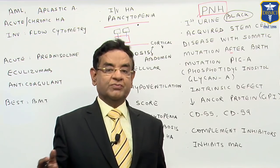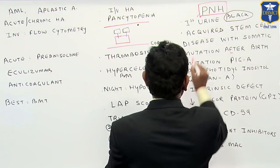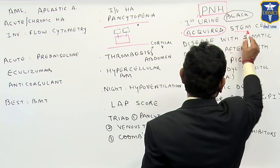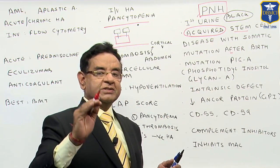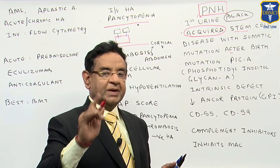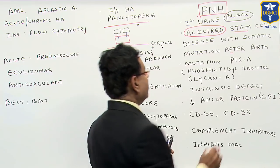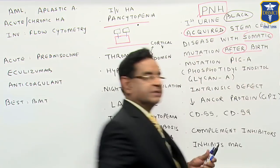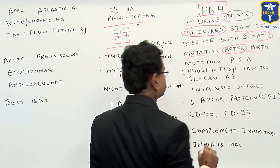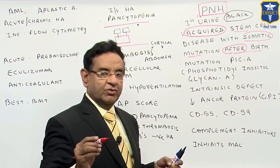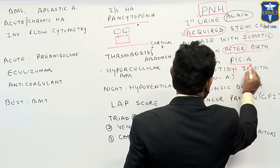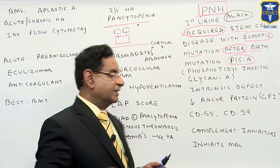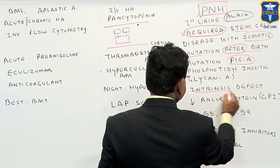What is the pathophysiology? It is an acquired stem cell disorder. That is why all three cell lineages — RBC, WBC, and platelet — are involved. It is a somatic mutation, a mutation after birth, that is why we say it is an acquired defect. The mutation occurs in PIGA — Phosphatidylinositol Glycan class A — and it is an intrinsic defect.